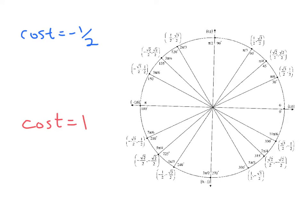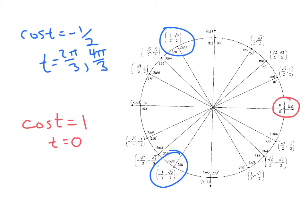So cosine equals 1 here. We're supposed to be in radians, so when t = 0 radians. Cosine of t has a value of -1/2. Remember that that's the x coordinate on the unit circle. And so that occurs twice: when t is 2π/3 radians, or 4π/3 radians in quadrant 3 there.